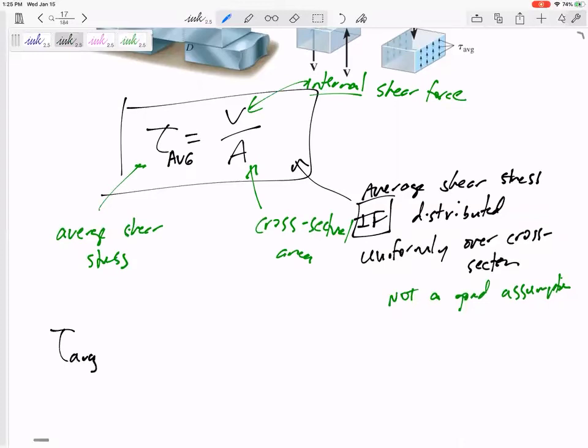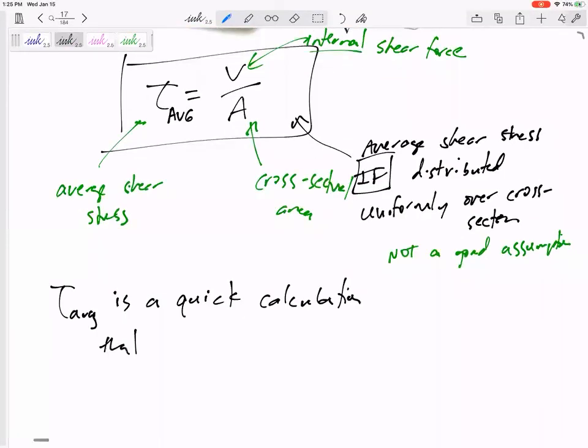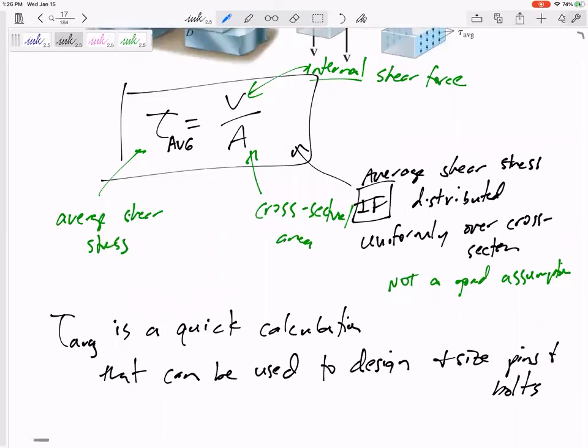Now, tau average is a quick calculation that can be used to design and size pins and bolts. V over A.